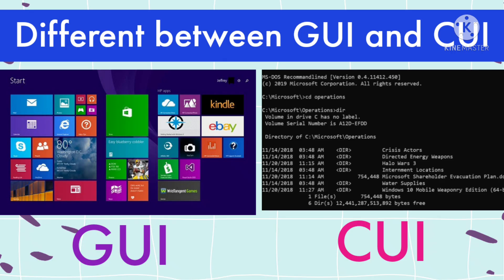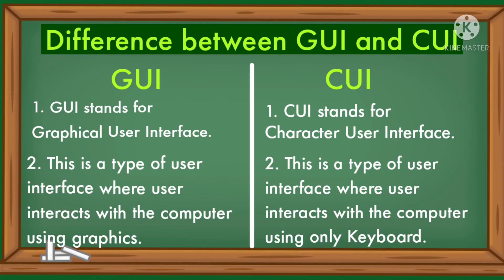Today we will learn the difference between GUI and CUI. GUI stands for graphical user interface, CUI stands for character user interface. GUI is a type of user interface where the user interacts with the computer using graphics. CUI is a type of user interface where the user interacts with the computer using only the keyboard.